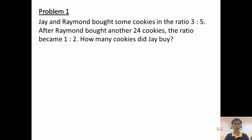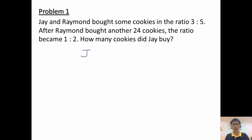Let's look at problem one. Jay and Raymond bought some cookies in the ratio of 3 to 5. After Raymond bought another 24 cookies, the ratio became 1 to 2. How many cookies did Jay buy? The first step is to find out what we are comparing — Jay and Raymond. So we write down Jay to Raymond, and the ratio is 3 to 5.